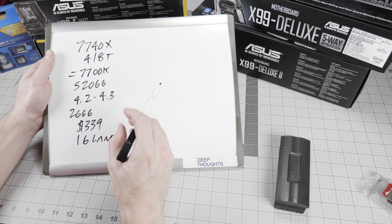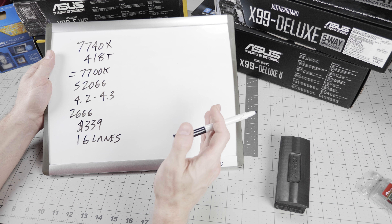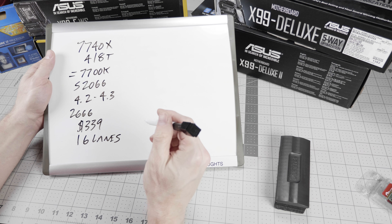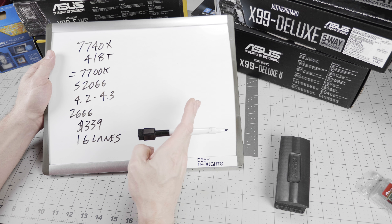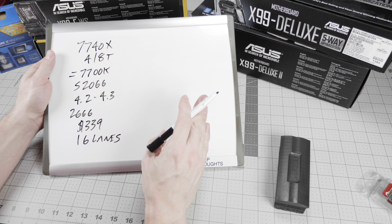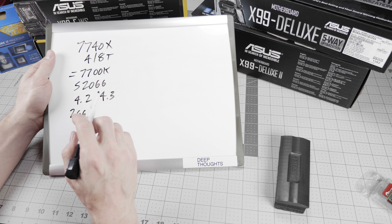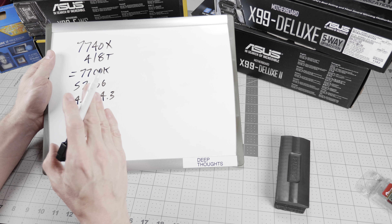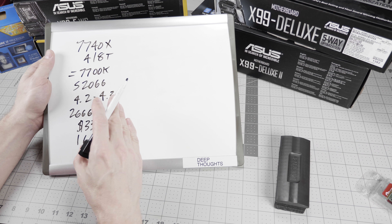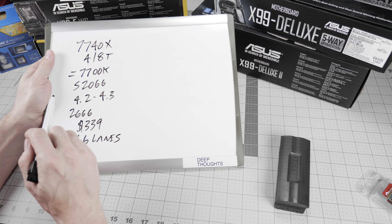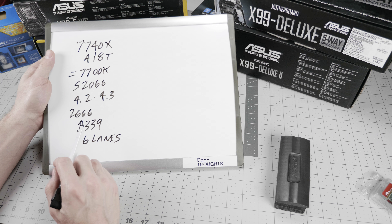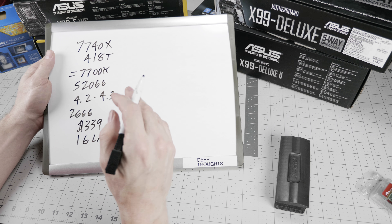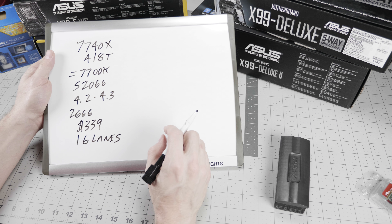We've had a bunch of people talking down X299, including a rant from Linus this week saying he doesn't understand the strategy. I am completely on the other side. If I were in the market for a new 7700K Z270 system, I would strongly consider going with the 7740X on X299, paying just a little bit more for the motherboard in the near term and getting that upgrade capability down the line.